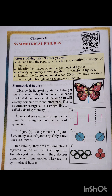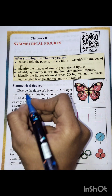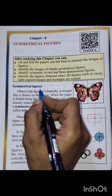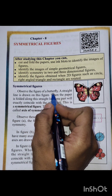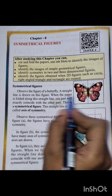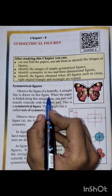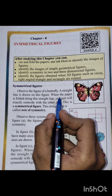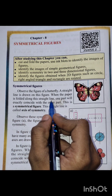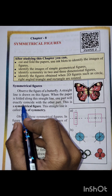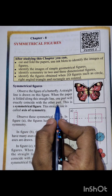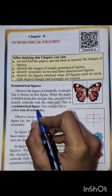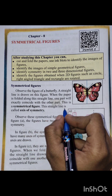Hello everyone, welcome back to the channel. Now let us start Chapter 8: Symmetrical Figures. Let's see what symmetrical figures are. Observe the figure of a butterfly — a straight line is drawn on this figure. When the paper is folded along this straight line, one part will exactly coincide with the other part. This is a symmetrical figure.